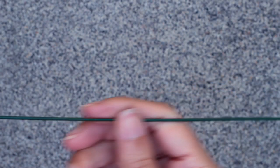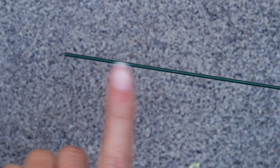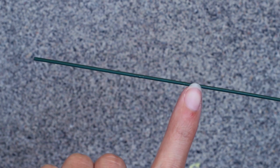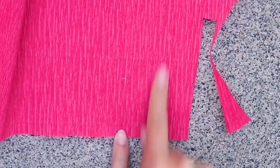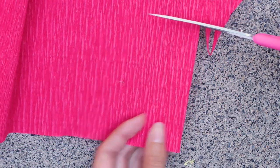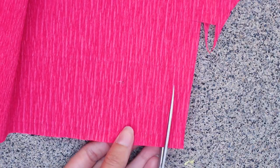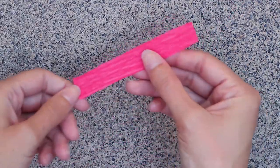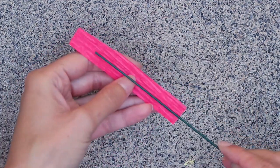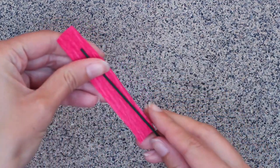For the stem, I'm using 16 gauge floral wire. I will list all the materials in the description. We're just going to be covering the first couple inches of this wire to create the middle part of the flower. I'm cutting a rectangle of this pink crepe paper. Make sure the crepes are going vertically, and I'm cutting this the length of the middle part of the flower.